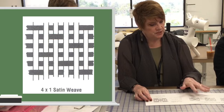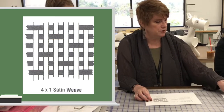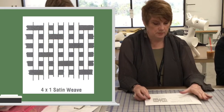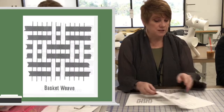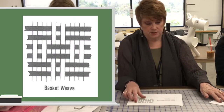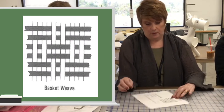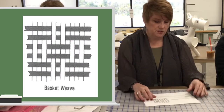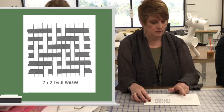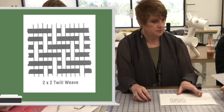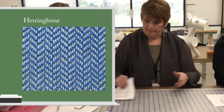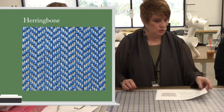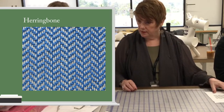Plain weaves, satin weave, twills, basket weave — I've got diagrams here showing what they look like. Satin weave, twill, herringbone, stripes, bridal satins. And here's our warp and weft diagram.